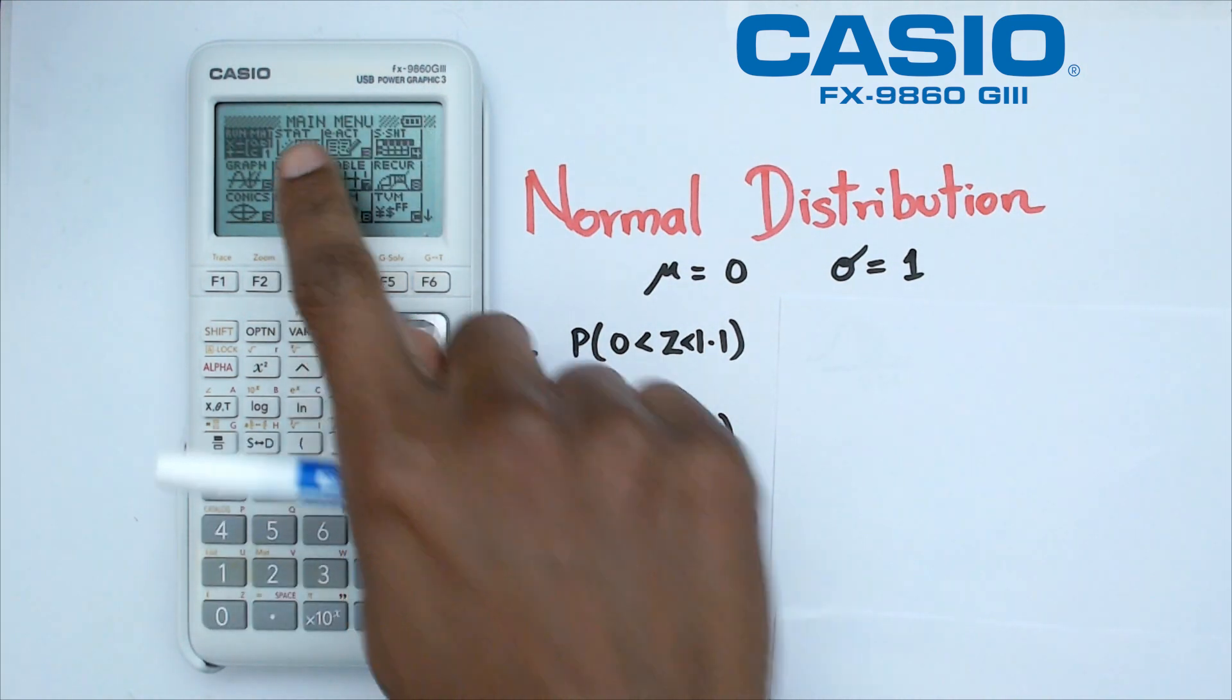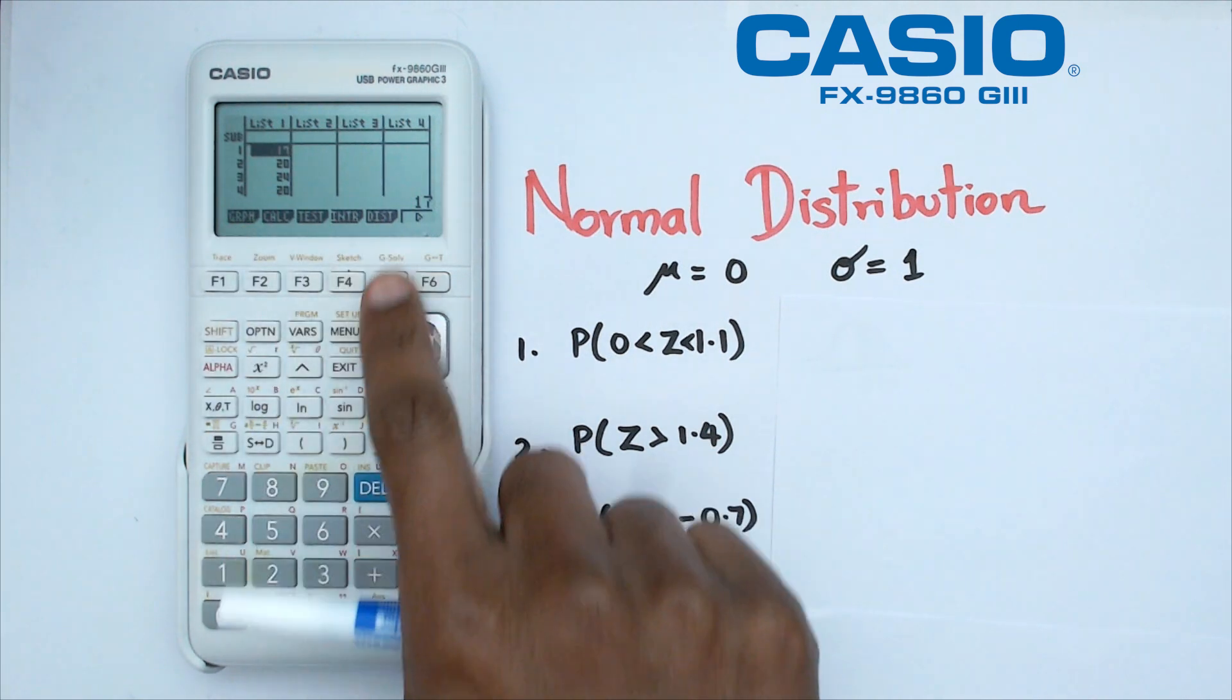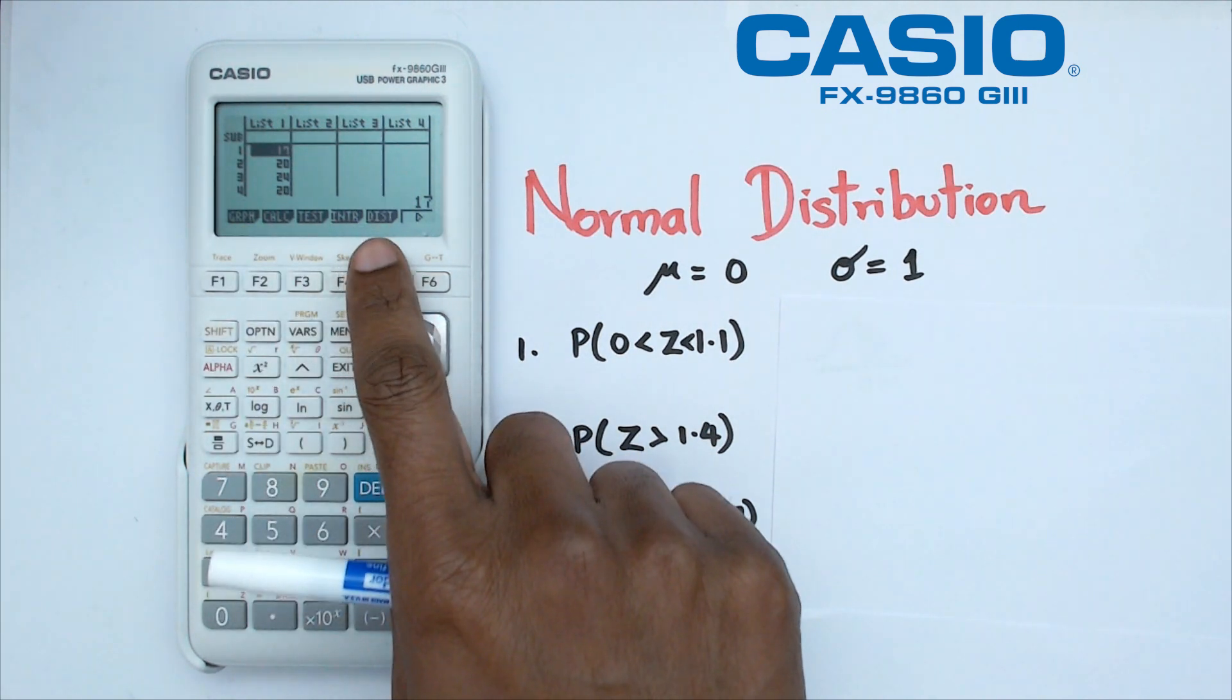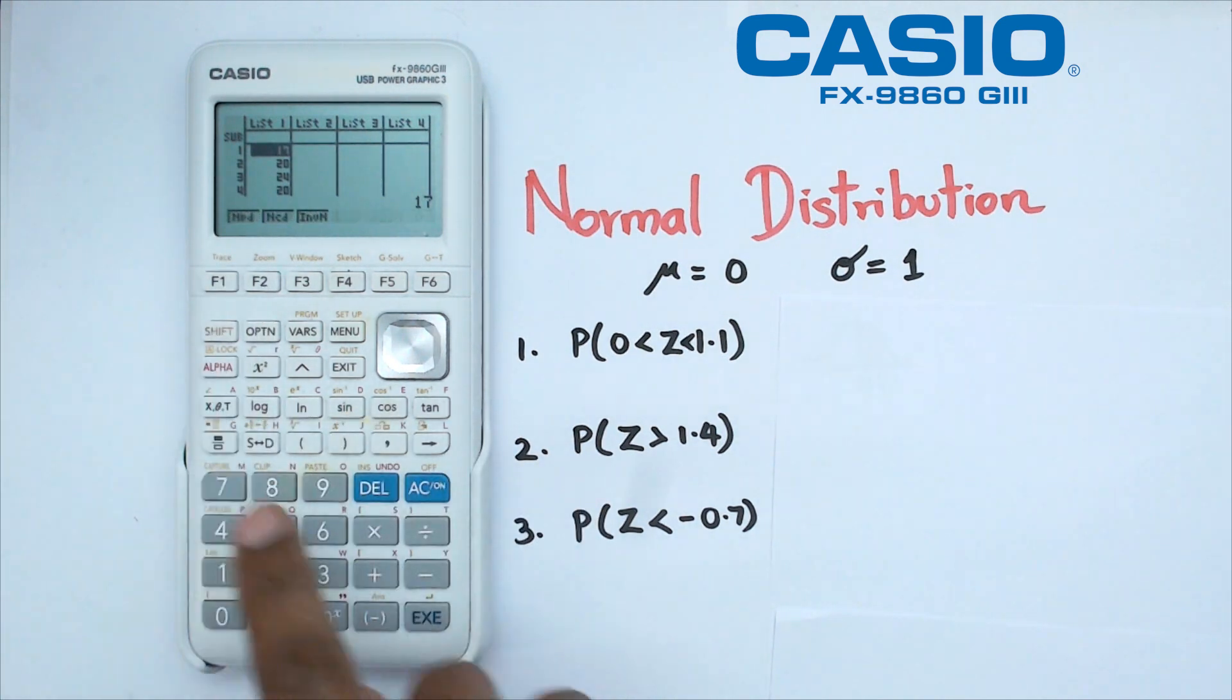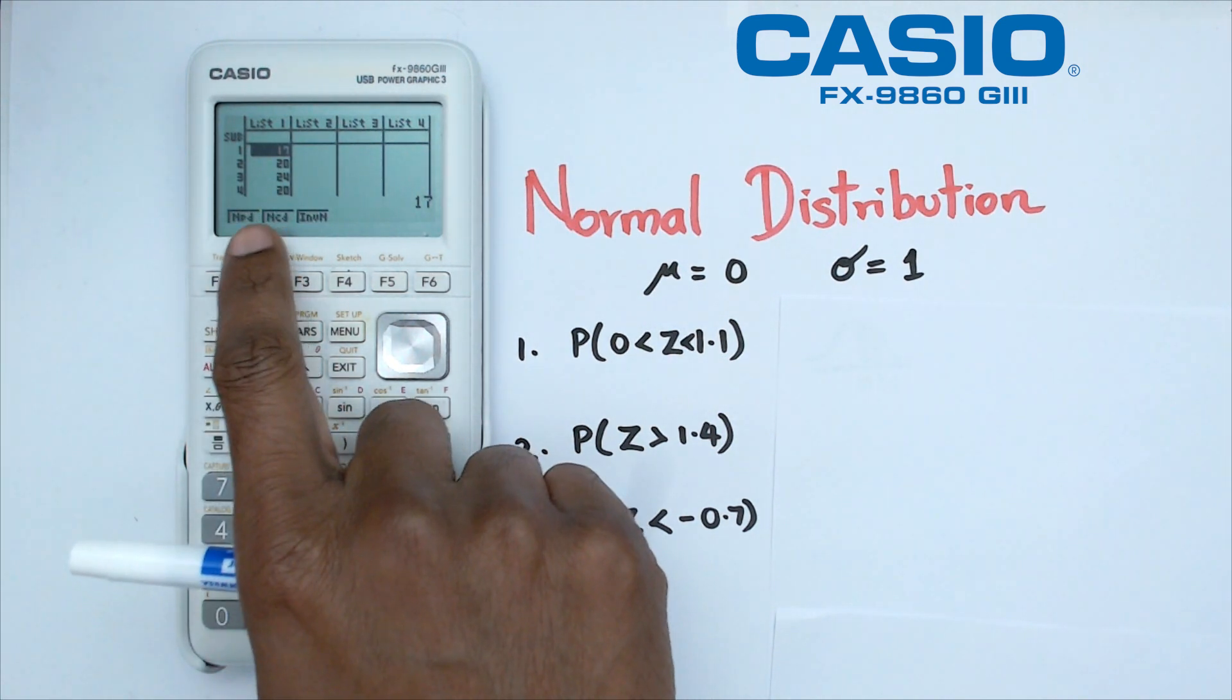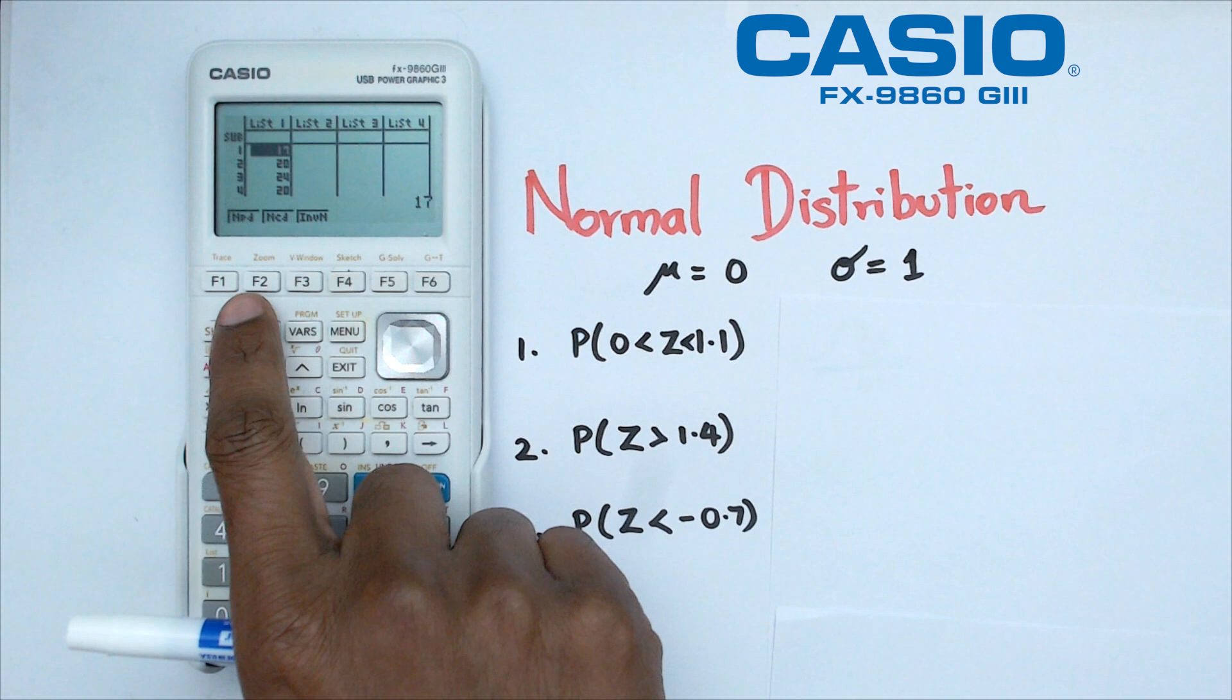go to the stat mode and under stat mode, we're going to go to F5 where it says distribution and we're going to click on F1 which says normal and we're going to be using the NCD button which is F2.